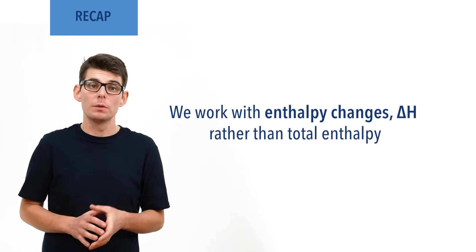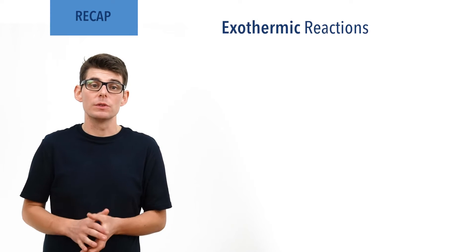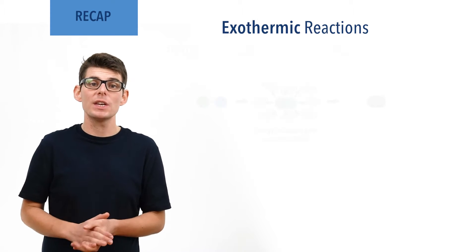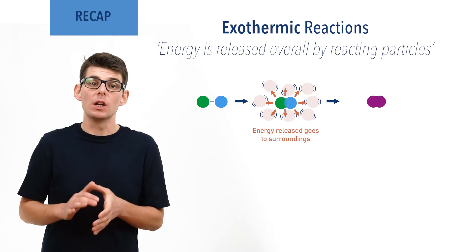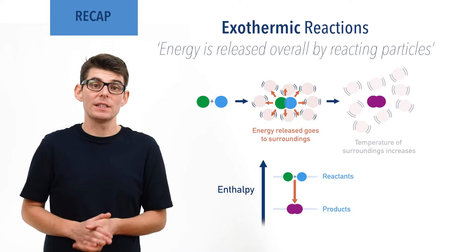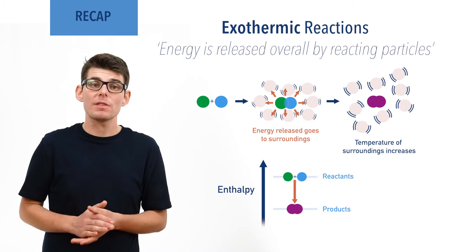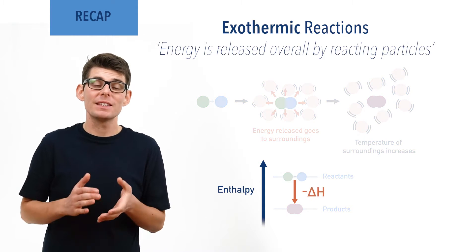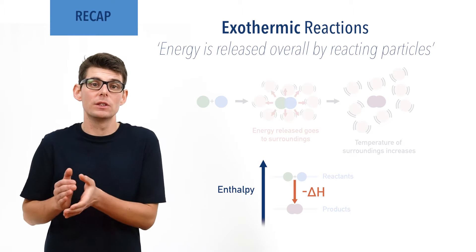In chemistry we work with enthalpy changes, shown as delta H, rather than total enthalpy values. Exothermic reactions describe reactions where energy is released overall by the reacting particles, making the products formed lower in energy and more stable, but increasing the heat content and temperature of the surroundings. These reactions have a negative enthalpy change as the amount of thermal energy stored up inside the products is less than in the reactants.